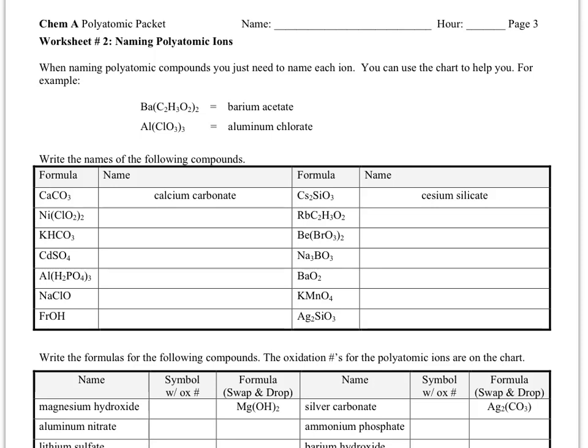This is worksheet 2 of the polyatomic packet, and this is really in many ways a continuation of worksheet 1. We're going to practice naming polyatomic compounds when given the formula and also the opposite in the second table on this worksheet when given the name writing the formula.